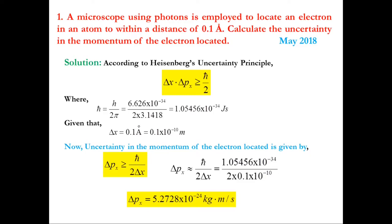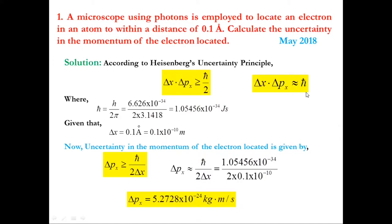Since Δpx is the momentum, it has dimensions of mass times velocity, so the unit of Δpx is kg·m/s. Also, we can write the Heisenberg uncertainty principle as Δx · Δpx ≈ ħ, where ħ/2 gives the minimum uncertainty product.